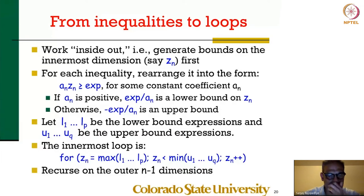Now what do I do? I have to eliminate the index that I have already generated the bounds for. So I basically have a polyhedron in the outer n minus 1 dimensions, z1 to z_{n-1}.